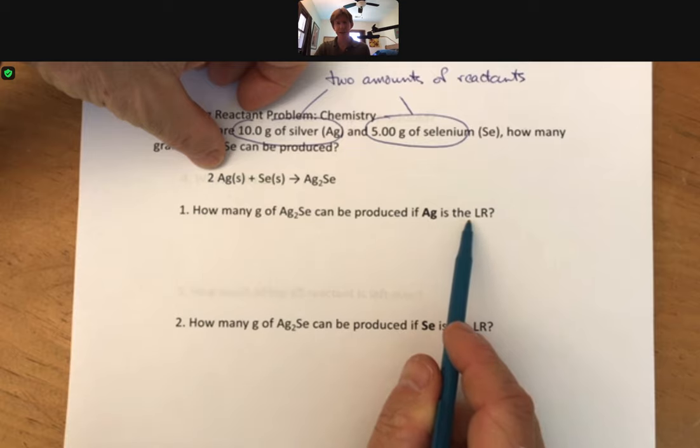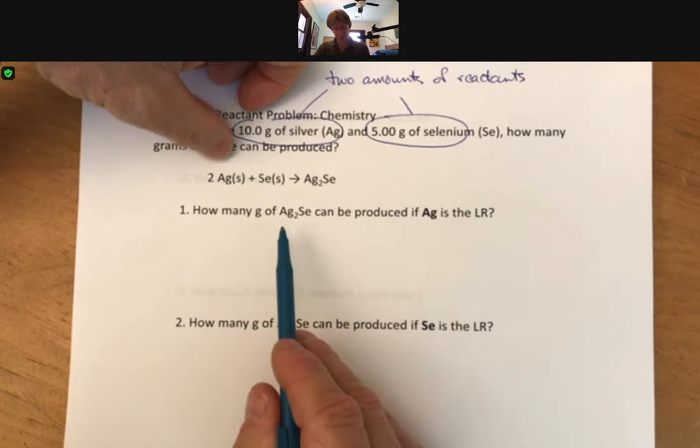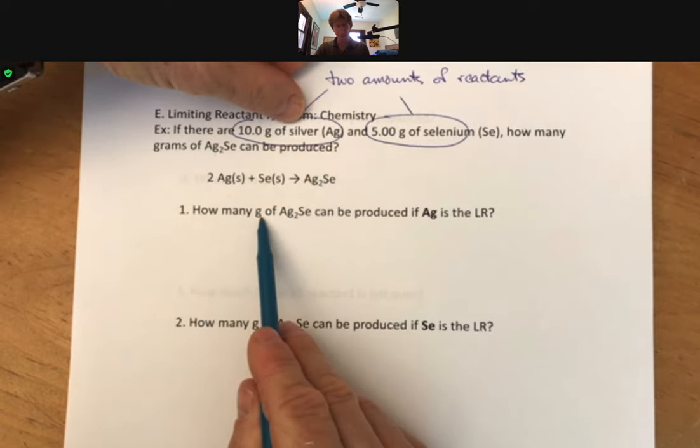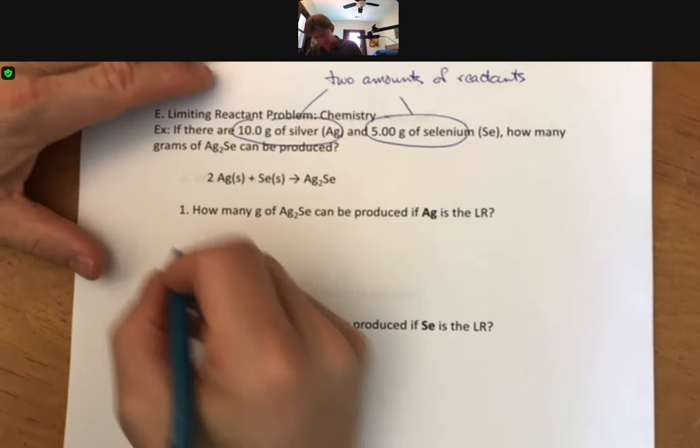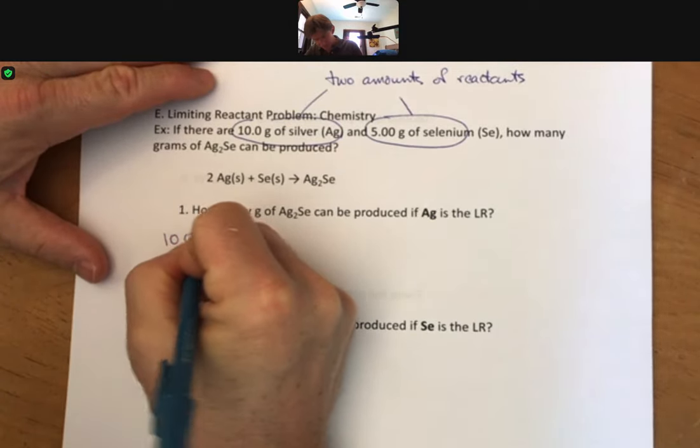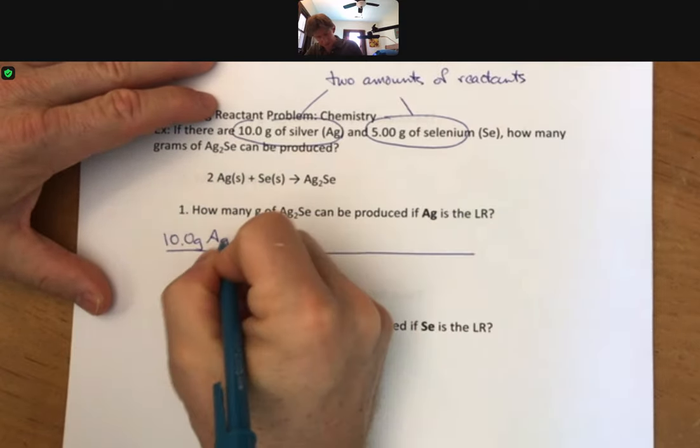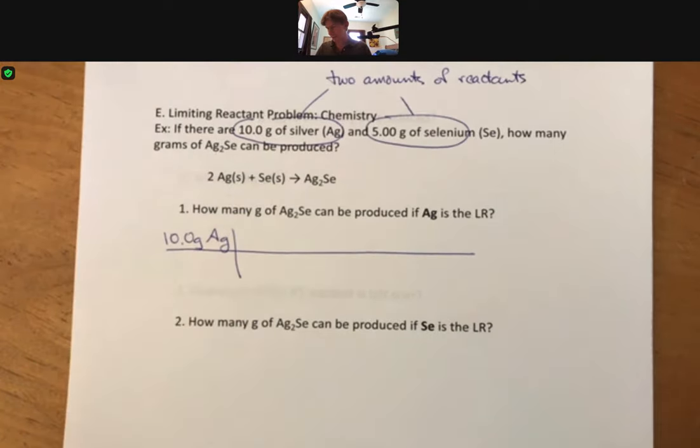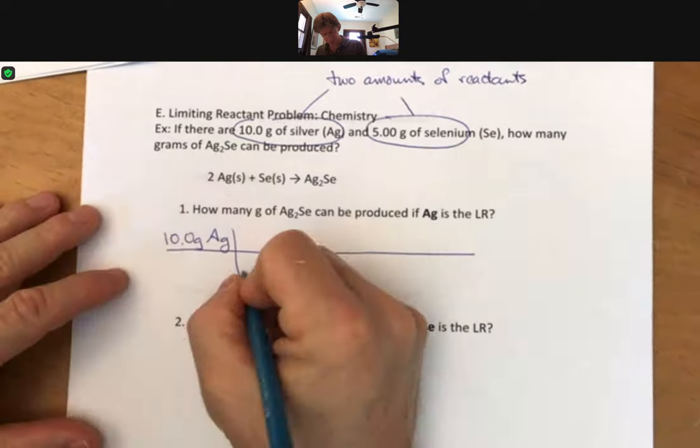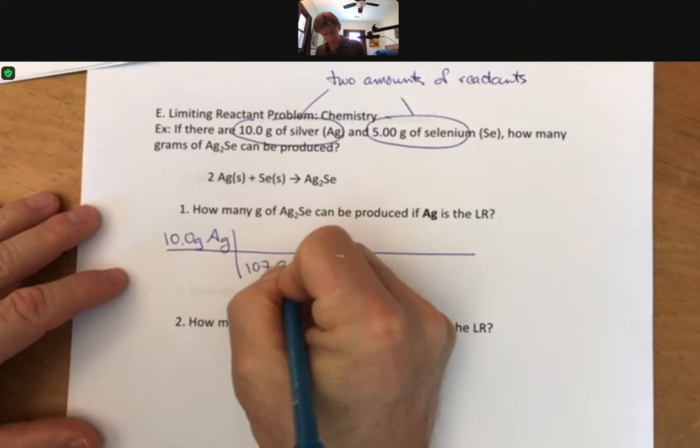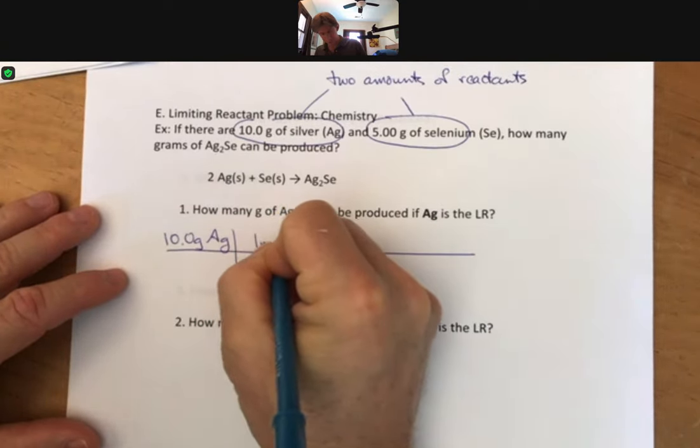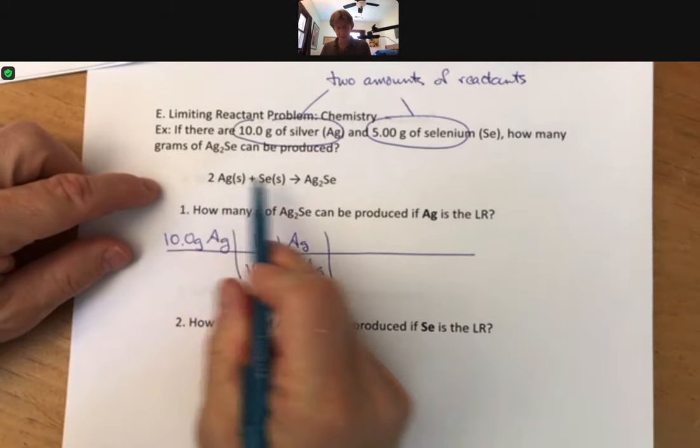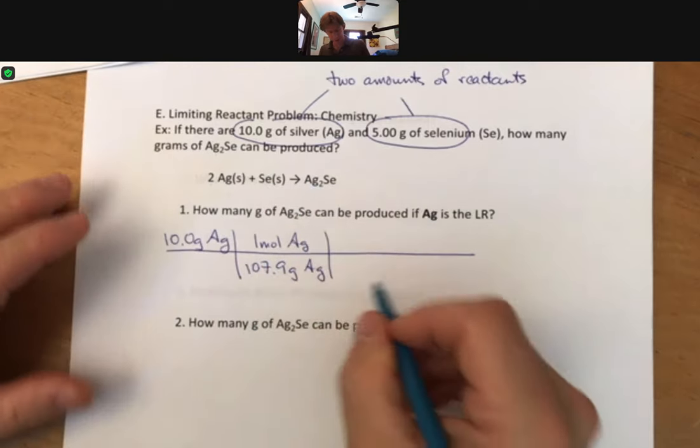This is going to be a GMMG (grams-moles-moles-grams). We have grams of silver, we're going to be ending with grams of silver selenide. Start with our grams. I'm going to have to look this up. Silver is 107.9 from our periodic table. Grams of silver for one mole. In two moles of silver reacted, we will get one mole of silver selenide.